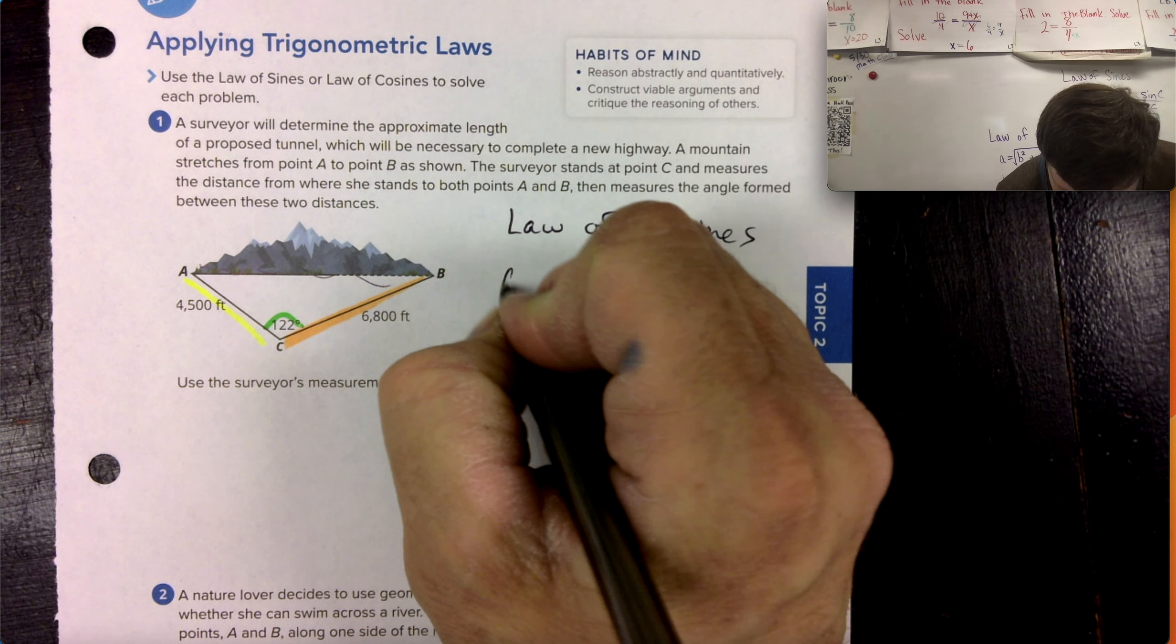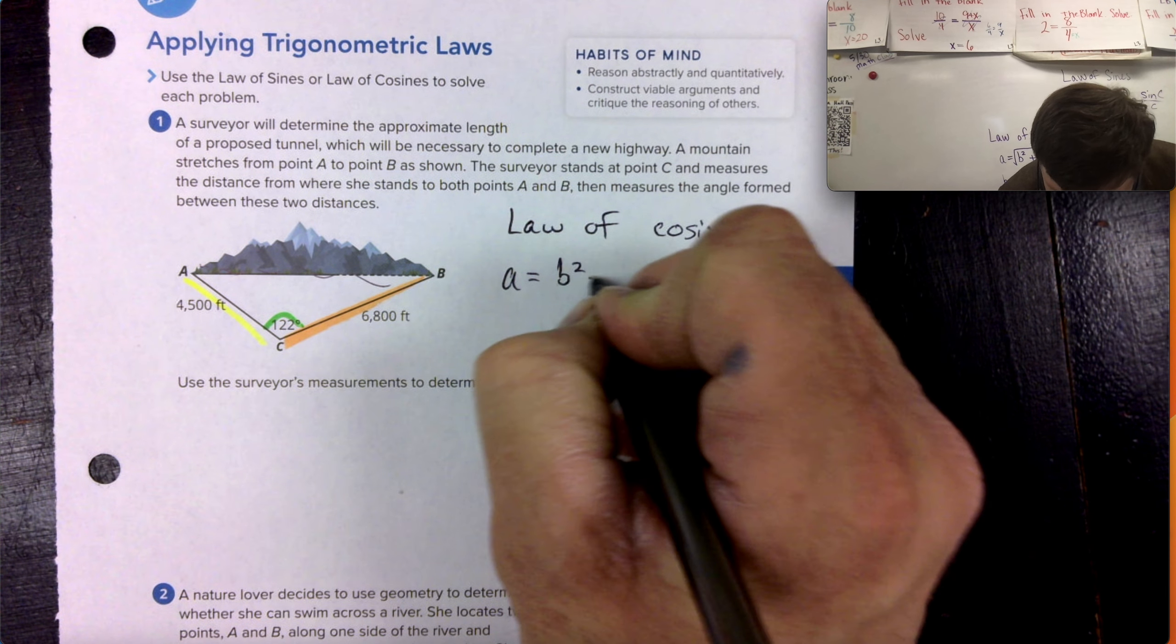The angle has to be between the two sides so that we can find the side across from that angle. This is law of cosines. So write down the formula. Thank you for the bell. Sorry that distracted you.